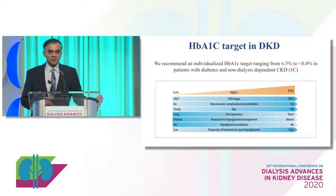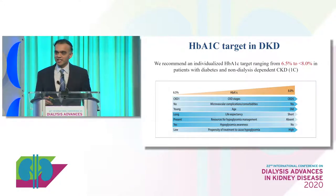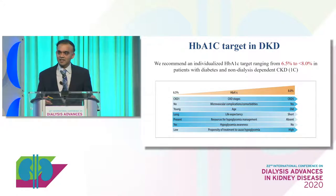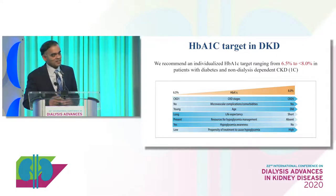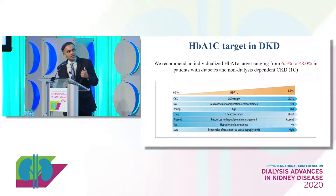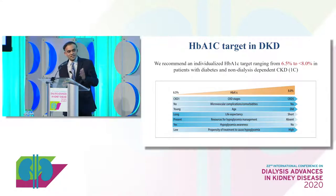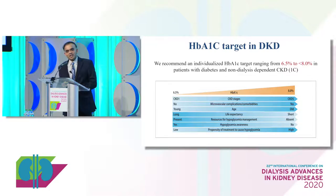Regarding target — this is controversial. ADA standards of care 2019 recommend an HbA1c target less than 7; ACP guidelines recommend 7 to 8. Our workgroup arrived at a broad range of 6.5 to 8. The lower end of 6.5 applies to patients with earlier CKD stages, longer life expectancy, or who can manage hypoglycemia. On the other hand, if patients are older, advanced CKD, or unable to manage hypoglycemic episodes quickly, you may want to liberalize the target toward 8.